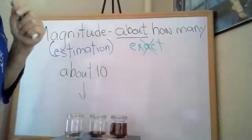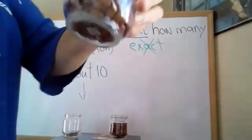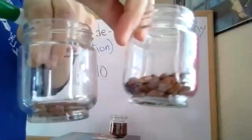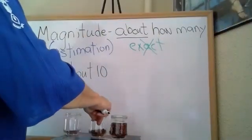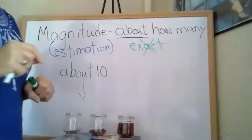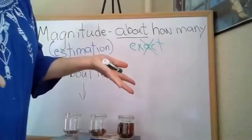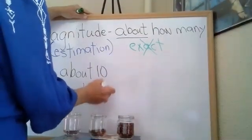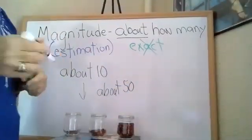Now we have the second jar. That's got a little bit more, doesn't it? Doesn't have as much as these, so our number has to be a little bit bigger. We chose this one to have about 10. How many do you think the middle jar has? About 50 maybe. I'm not going to count them but I'm going to write the word about 50.